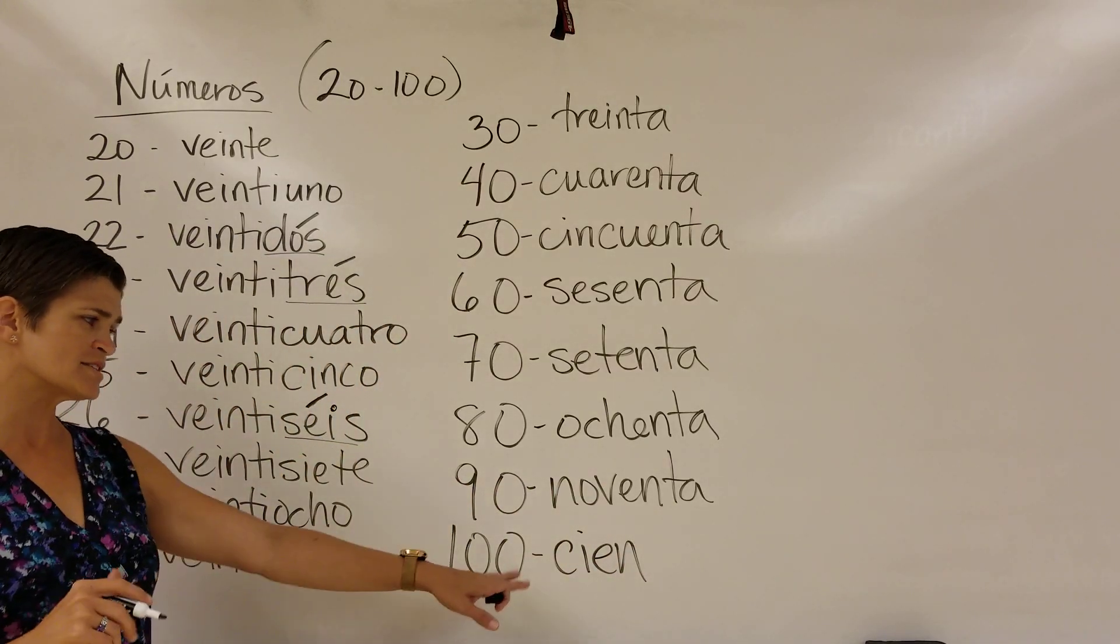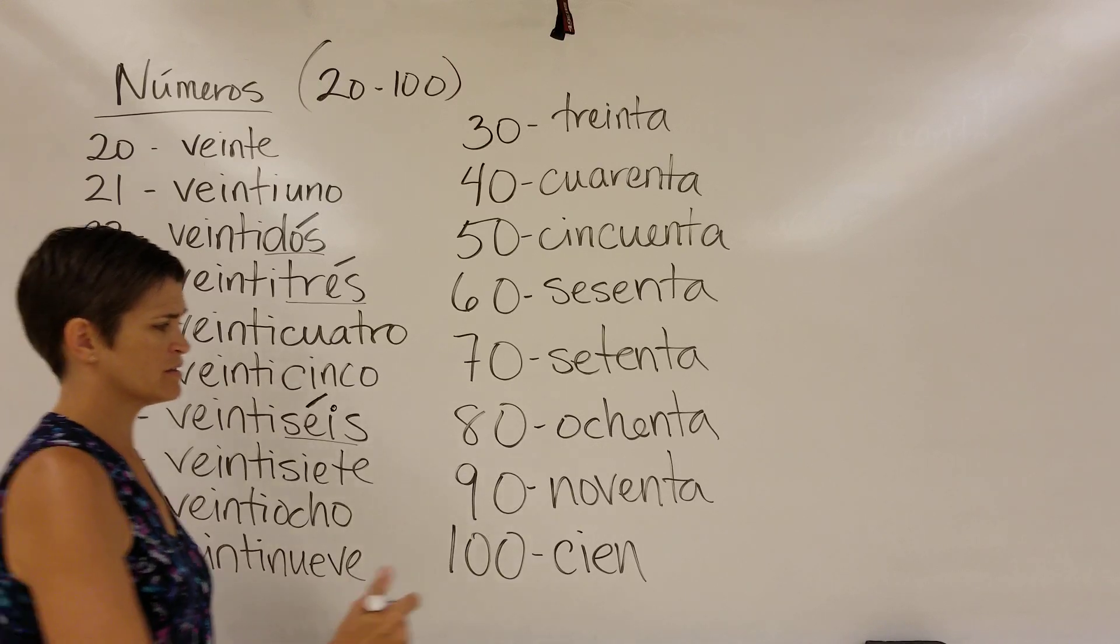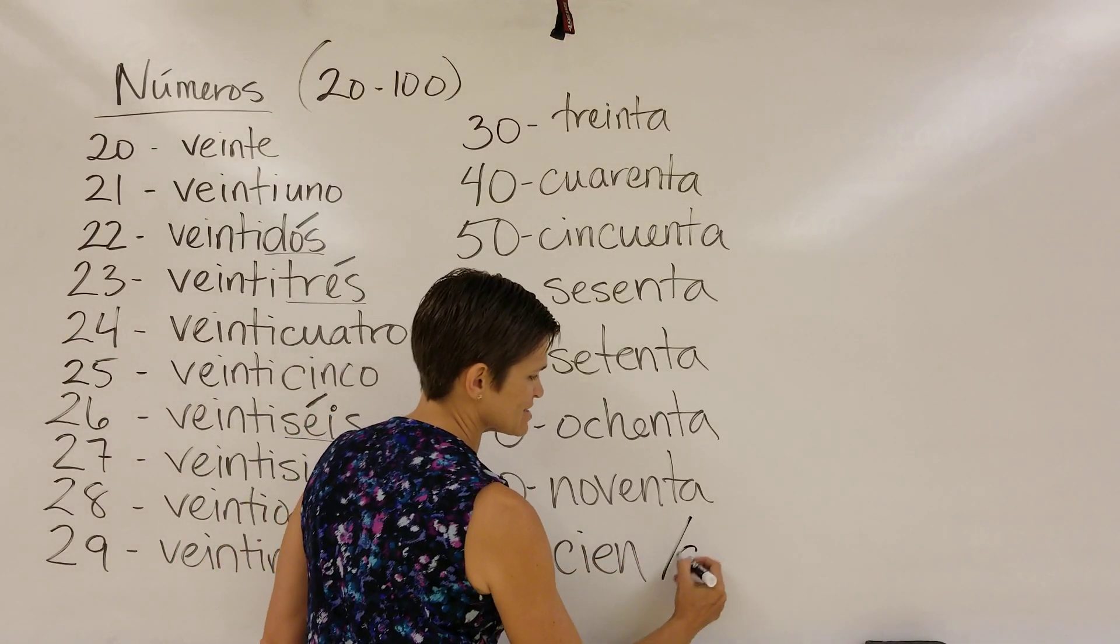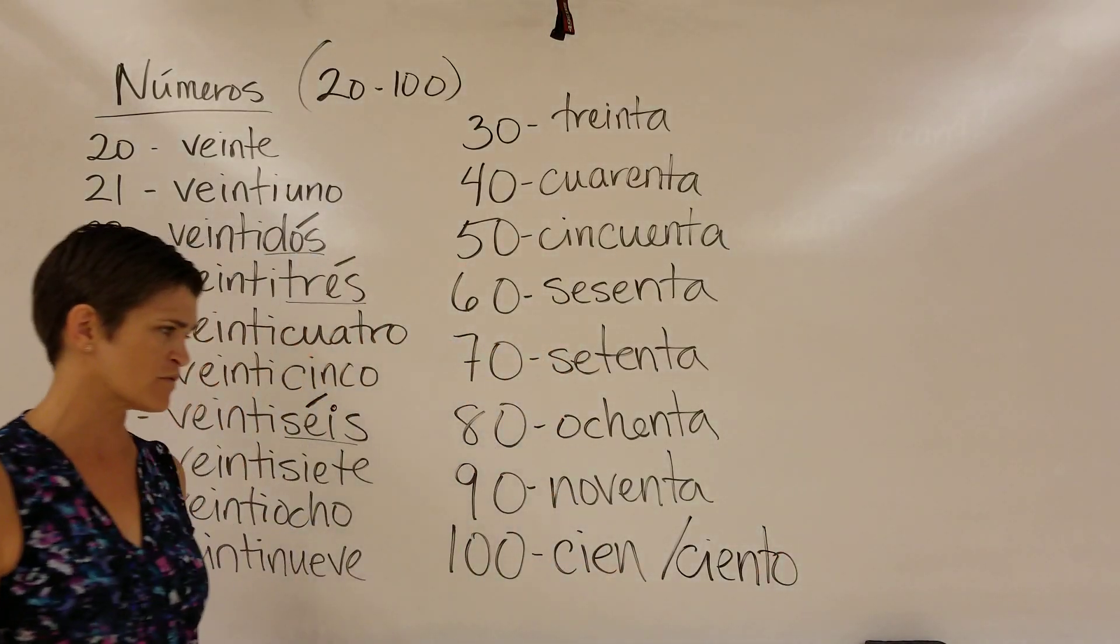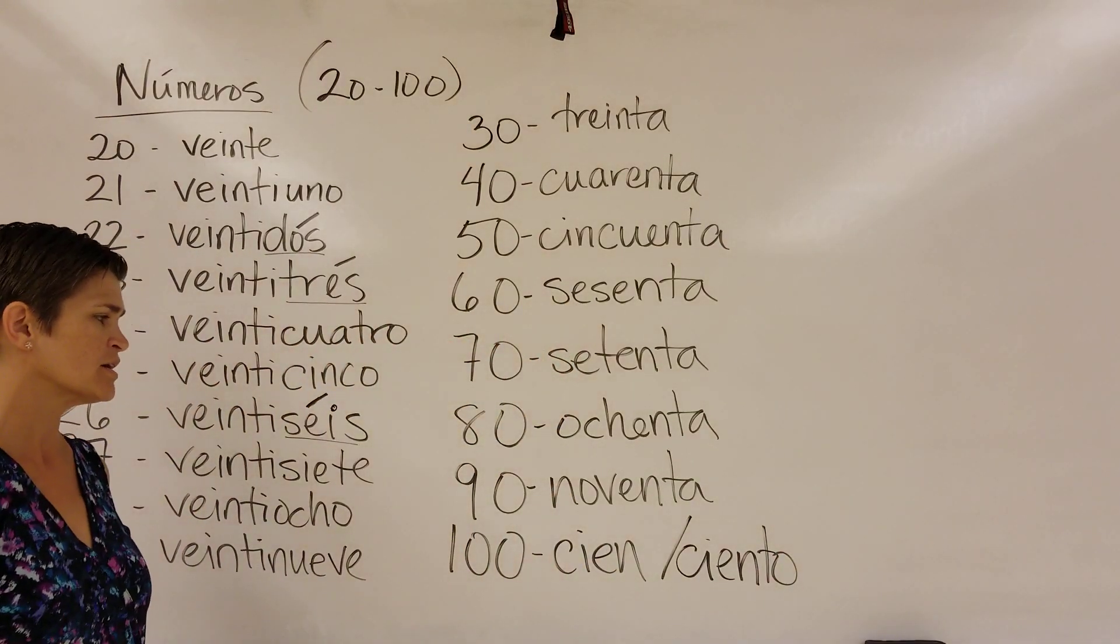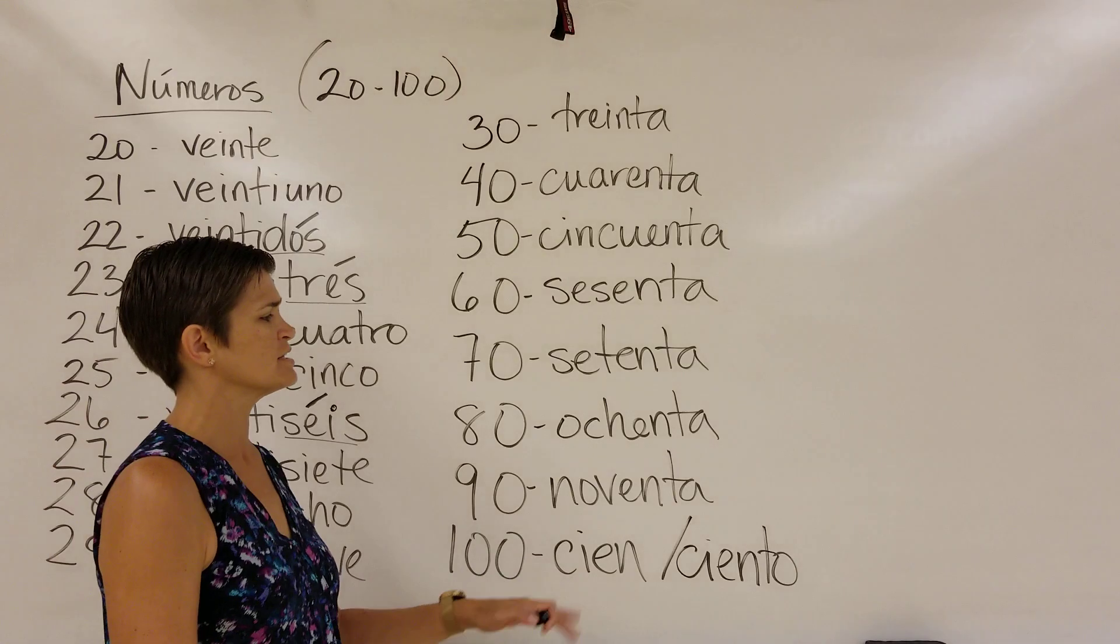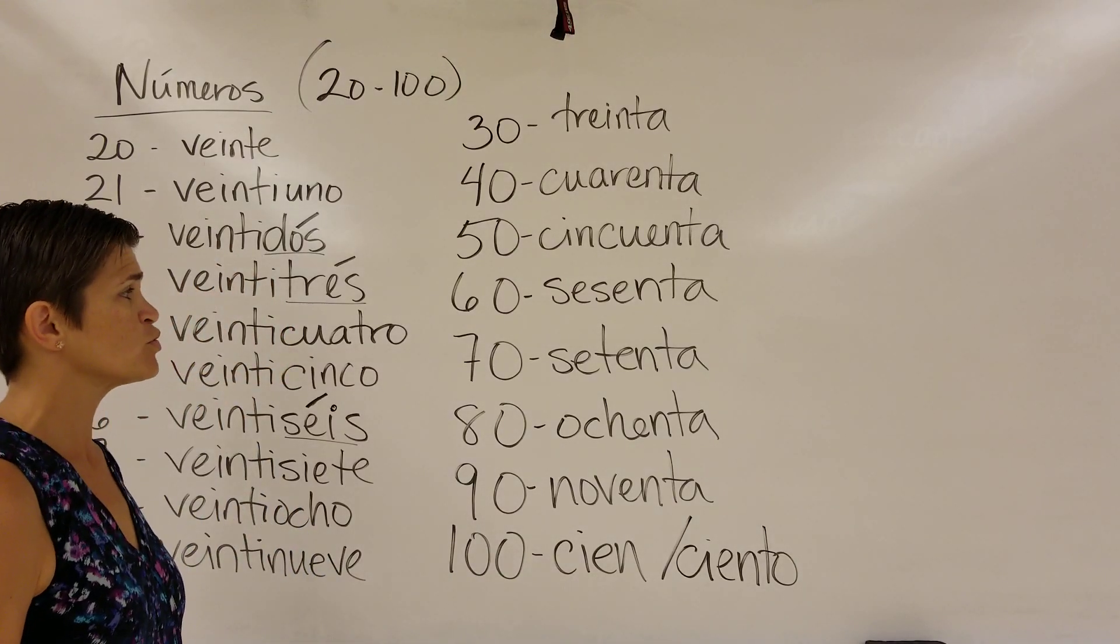When it's 100 all by itself, the number is cien. If it's 100 and something else, if there's more numbers after it, then it becomes ciento. So if it's 101 or 120, but if it's just 100, then it's the number cien.